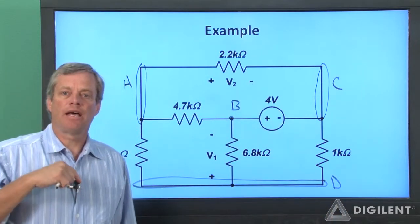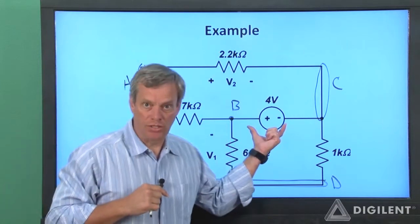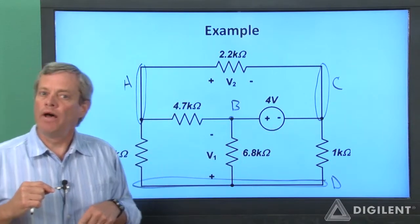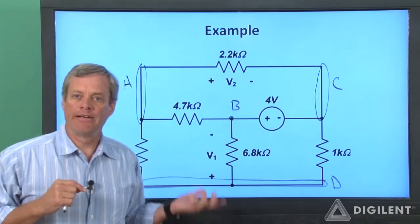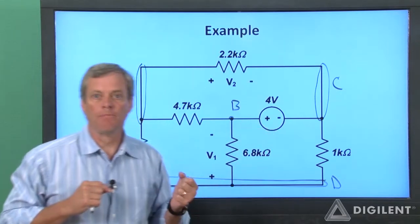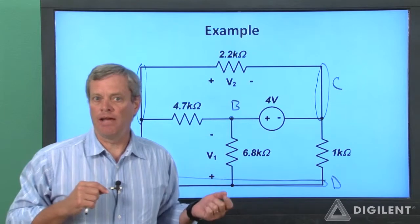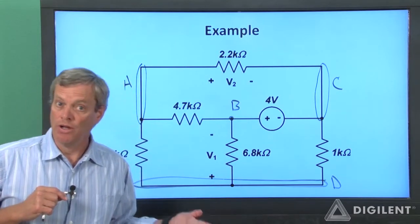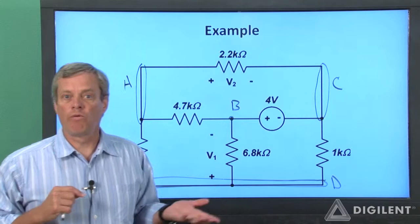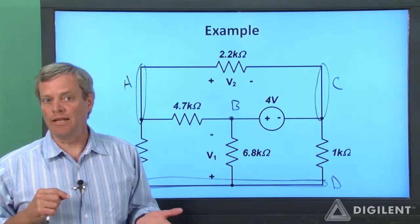Next, we'll decide how to implement the source. I'll use channel 1 of the analog discovery waveform generator to apply this 4 volt difference. Remember that the analog discovery sources all apply a voltage difference relative to the discovery's ground.